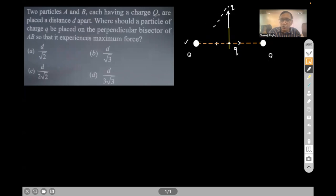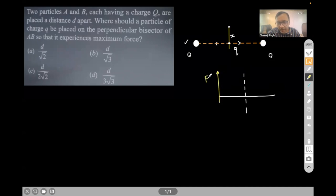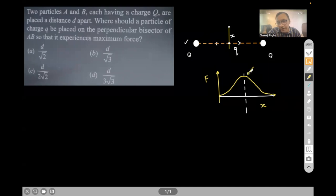So there are two situations where the force on small q is zero: one is at the midpoint of the line connecting both charges, and the other is when q is very far away. Somewhere in between there should be a distance x where q experiences maximum force. If we draw a graph with net force on the y-axis and x on the horizontal axis, the force is zero at x = 0, peaks somewhere in between, then tends back to zero.